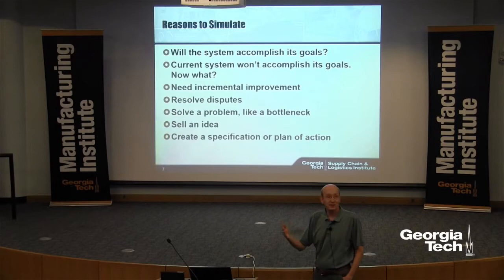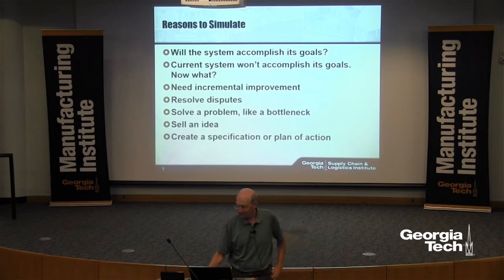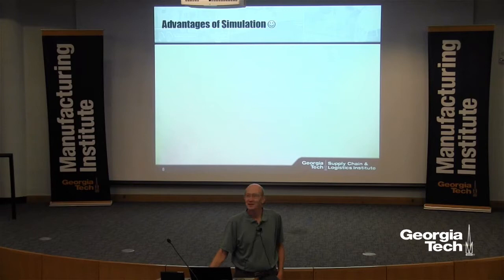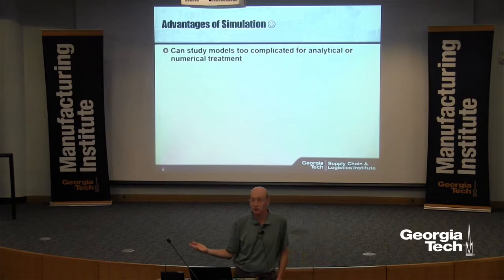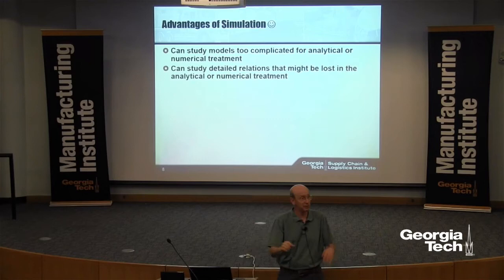Simulation is very nice — sometimes people want to make pretty graphics so that non-engineers can understand. You can look at models too complicated for numerical treatment; that's one of the reasons you'd use simulation. You can study very detailed relationships and see where everything in the supply chain is at any given moment in the simulation — you can't do that with queuing theory equations. For an M/M/1 queue in steady state, I can give you the expected number in the system — rho over 1 minus rho — but that doesn't really tell you what's actually going on at any given time.